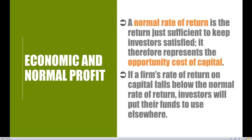So there are three different scenarios a firm can find itself in: earning economic profits, earning an economic loss, or earning zero economic profit — a normal profit. In the next section, we'll work through a big story problem to make sure you understand the differentiation between explicit and implicit costs, as well as accounting profit and economic profit. Because this is an economics course, we need to look at economic profit and implicit costs in a bit more detail.